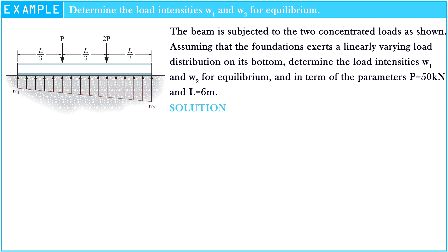In order to determine the load intensities W1 and W2, first we should convert the linearly varying distribution load to point loads. For the rectangular shape load, we get W1 multiplied by length of the beam.